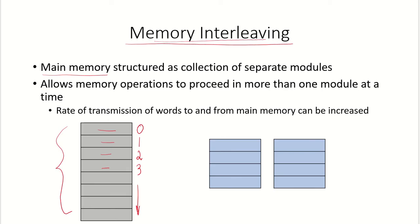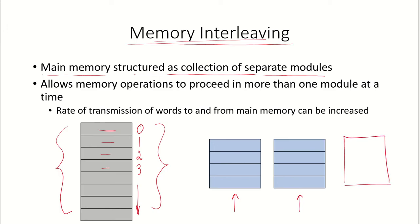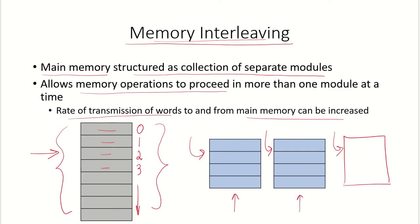Memory interleaving refers to the main memory being structured as a collection of separate modules. Instead of one single module, we will have different modules and different addresses will be available in these separate modules. This allows memory operations to proceed in more than one module at a time, so if the main memory can be accessed parallelly in multiple modules, the memory access time decreases and the rate of transmission of words to and from the main memory can be increased.